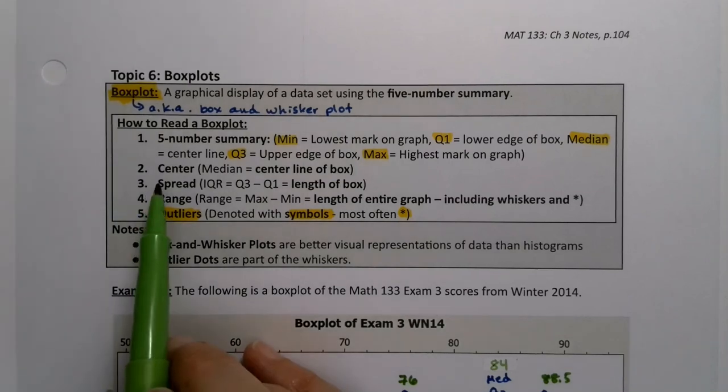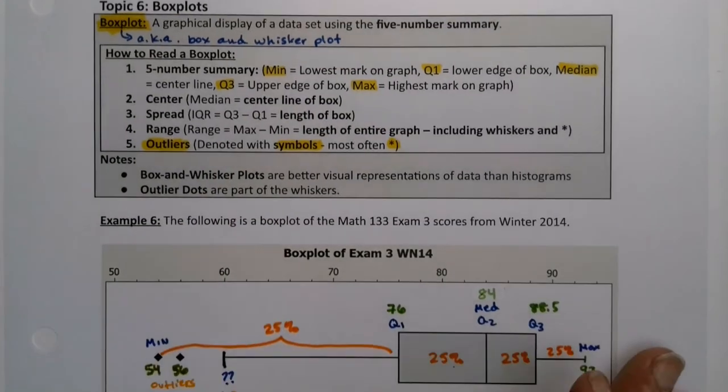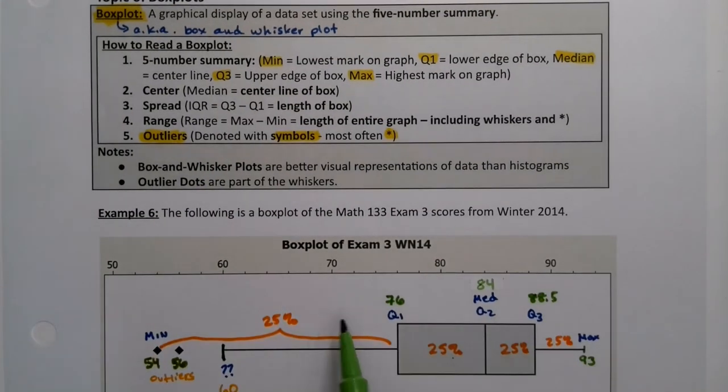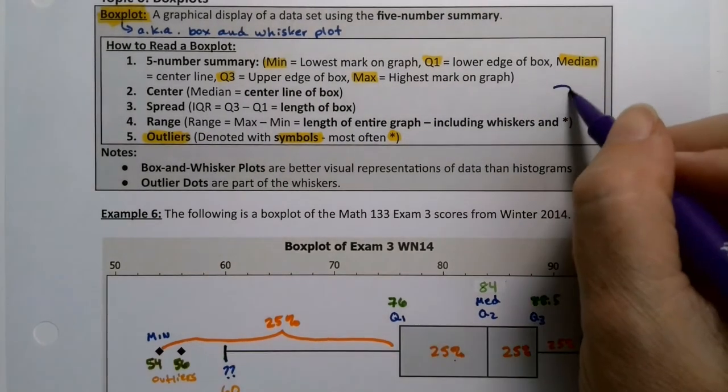One thing I forgot to mention in the last video is that when you're looking at a box plot, you're seeing the center as the center line, that's the average. The spread is the length of the box from Q1 to Q3, and the range is the min to the max. But you can also see the shape.